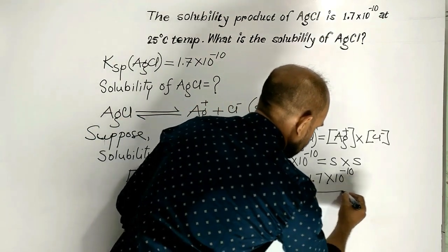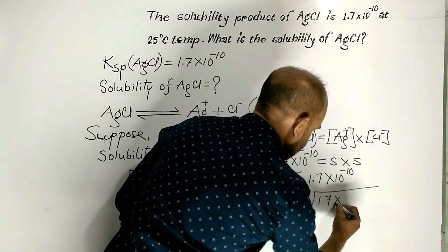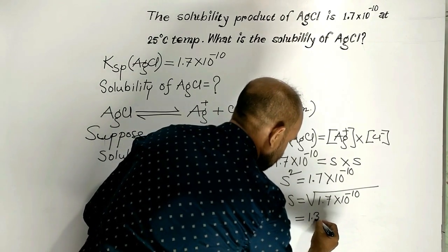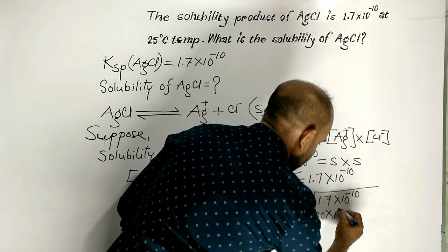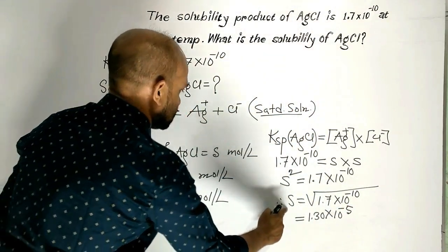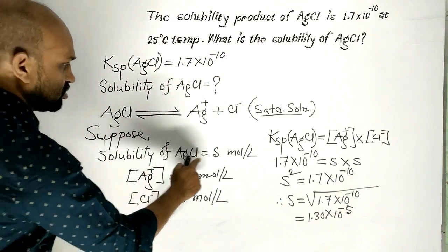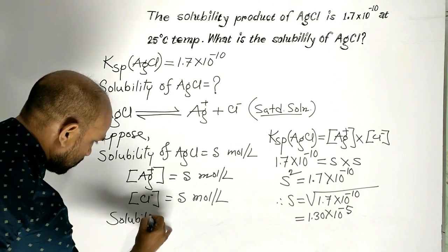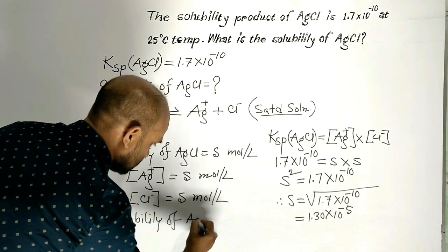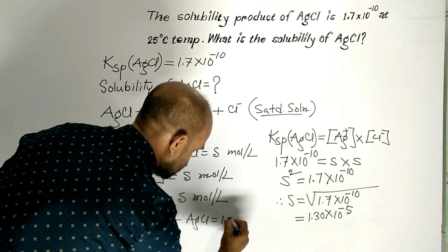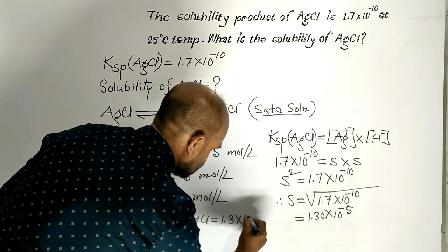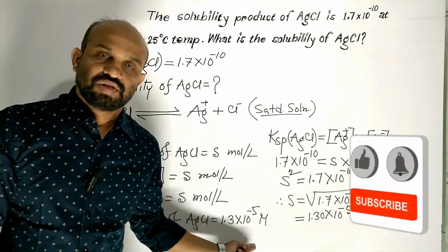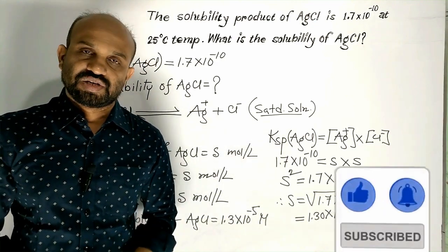S is equal to the square root of 1.7 times 10 to the power minus 10. This is equal to 1.30 times 10 to the power minus 5. So the solubility of silver chloride is 1.30 times 10 to the power minus 5 mol per litre at 25 degrees Celsius temperature.